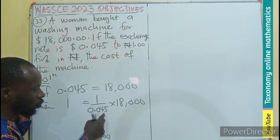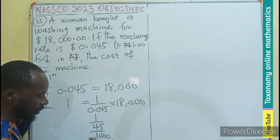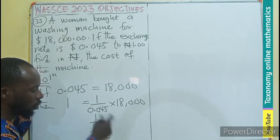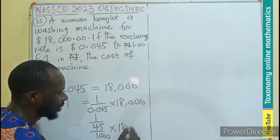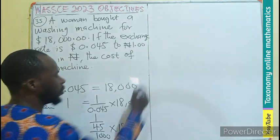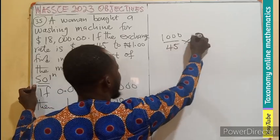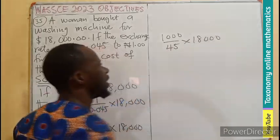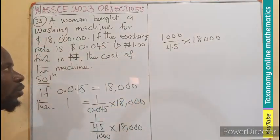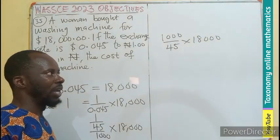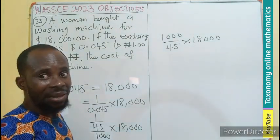So double division. The 1,000 goes up to multiply the 18,000. So this is going to be 1,000 times 18,000 divided by 45. So what do we do? We can use 5 or even 45 to cancel and get our answer.